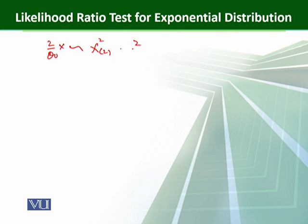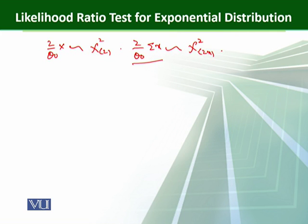So 2/theta naught * sum(x) also follows the chi-square distribution but with 2n degrees of freedom. We multiply by this constant so that we can find the distribution of the whole quantity, which is chi-square with 2n degrees of freedom.